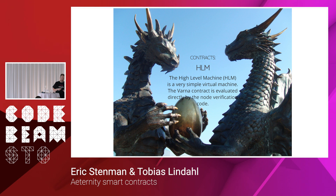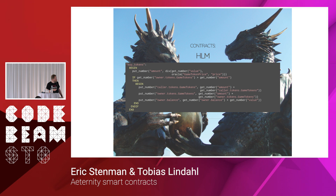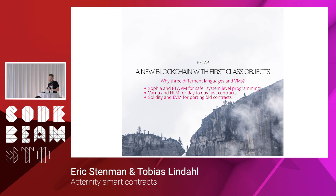Varna compiles to HLM — the high-level machine — which is basically not really a virtual machine, but inline code that does the checking of blocks before mining and will also execute this code. The HLM syntax is not something anyone should ever have to read except for the poor implementer of the HLM machine. So we're building a new blockchain with first-class objects and three different languages: Sofia for safe provable contracts with a complex type system, Varna for simple day-to-day programming, and Solidity/EVM for backwards compatibility with Ethereum.